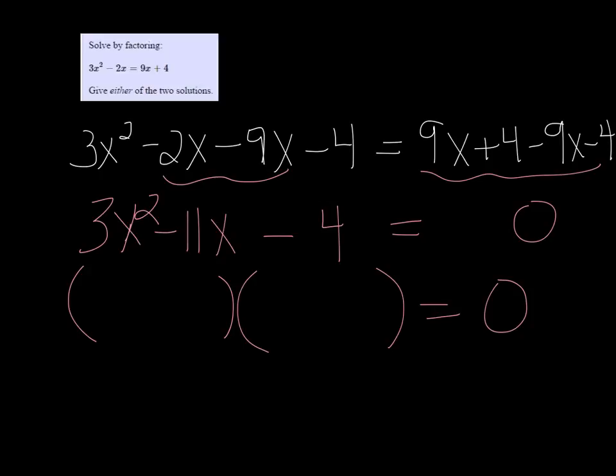So to get 3x squared, I know I'm going to need a 3x and an x. And to get 4, I could use 2 and 2 or 4 and 1. But I'm looking at this middle number, which is an 11. And I know that 4 times 3 is 12, so if I subtracted 1 from that, I would get 11. So my belief is that I'm going to need a plus 4, maybe, and a minus 1.